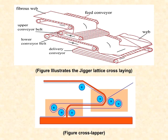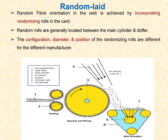In the random lay or air lay process, fibers are deposited in layer form by the blowing of air. Random fiber orientation in the web is achieved by incorporating randomizing rolls in the card. Randomizing rolls are generally located between the main cylinder and doffer. The configuration, diameter, and position of the randomizing rolls differ between manufacturers.